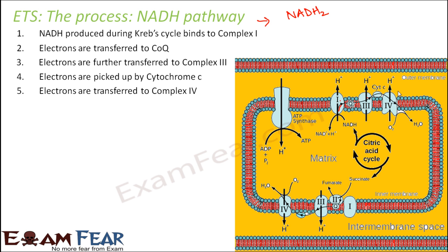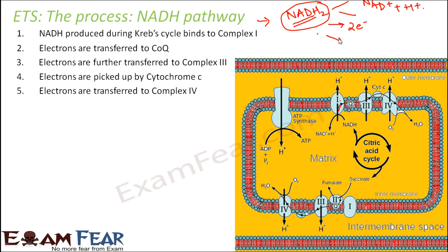One simple question: where are these electrons coming from? The answer is the electrons are coming from NADH2. When NADH2 is broken, it breaks into NAD+ and H+. Each NADH2 molecule will give two electrons and one hydrogen ion, or proton. When it releases these, the hydrogen ions move out to the intermembrane space, while the two electrons are carried through the chain.